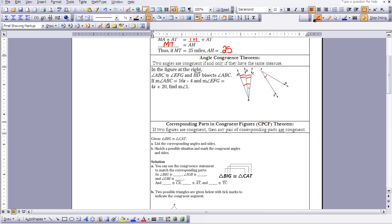Now we're given that angle ABC equals 16X minus 4. So this large angle ABC equals 16X minus 4. And the measure of angle EFG equals 4X plus 20.